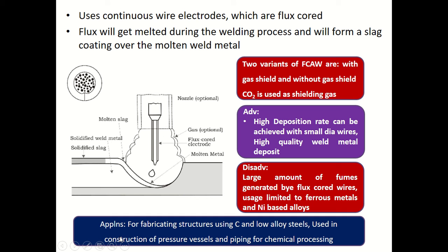Applications of FCAW include fabricating structures using carbon and low alloy steels, where this welding process is widely used. It is also used in the construction of pressure vessels and piping for chemical processing.